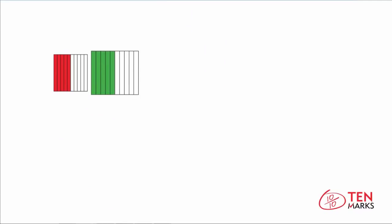Here, we have two fraction models. We can count - if you count each model, let's find out how many parts are in the whole. I'm going to mark them with dots and count aloud: 1, 2, 3, 4, 5, 6, 7, 8, 9, 10. So this means the denominator here would be 10.